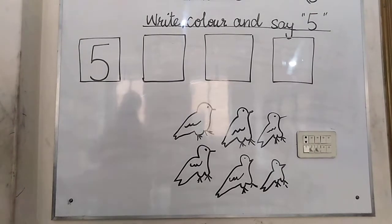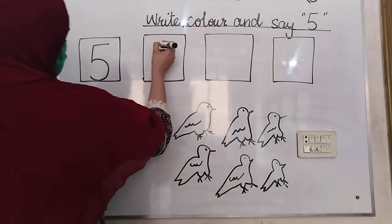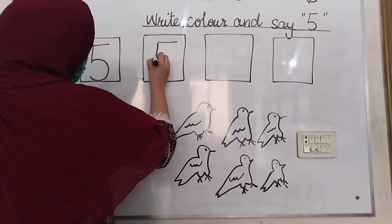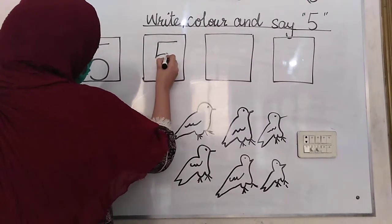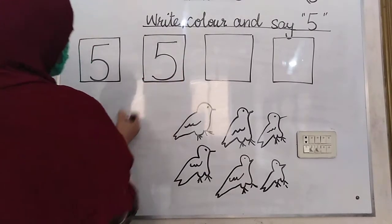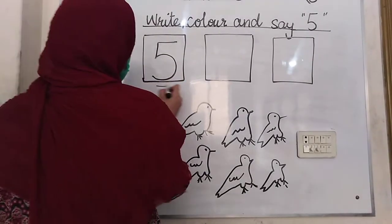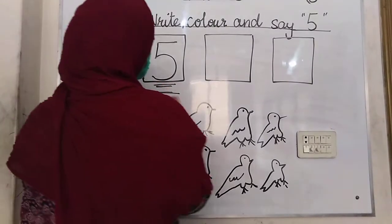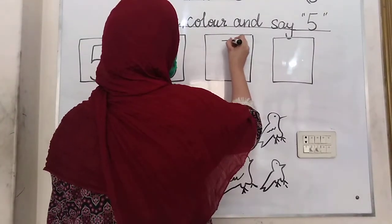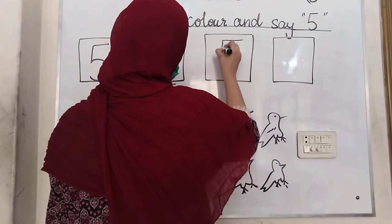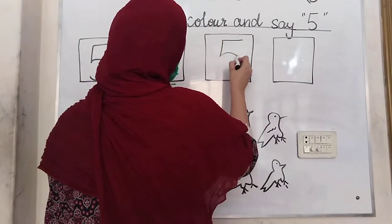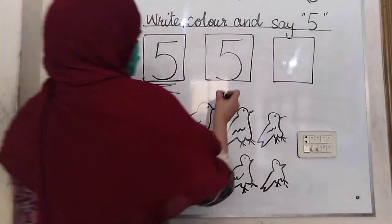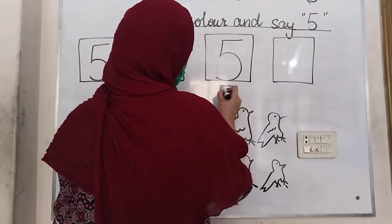Look at the board. Make a sleeping line, then make a standing line, then make a half circle. Which number is this? 5.